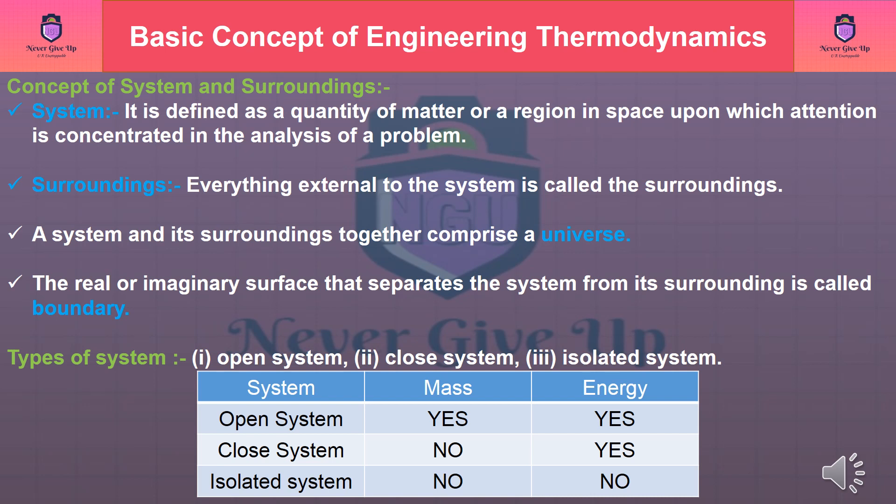Types of system: 1. Open system, 2. Close system, 3. Isolated system. Open system: Mass and energy both can transfer. Close system: Mass cannot transfer, only energy can transfer. Isolated system: Mass and energy both cannot transfer.